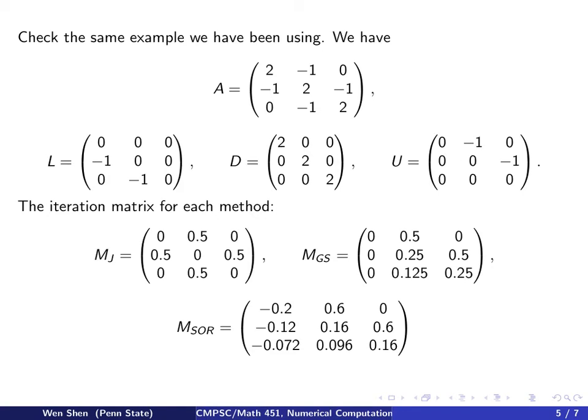And one can easily compute those iteration matrices, the coefficient matrix M for Jacobi, M for Gauss-Seidel, and M for SOR following the formula we showed in the previous page. And these are the three matrices we get.